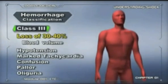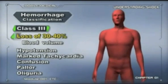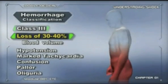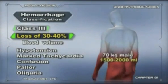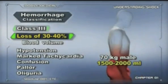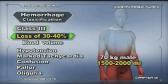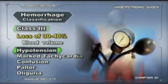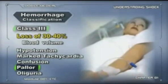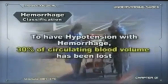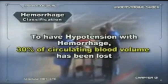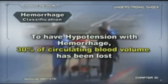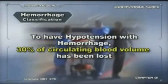Class III hemorrhage is a loss of 30 to 40 percent of blood volume. In a 70 kilogram man, this is 1500 to 2000 milliliters. These patients will have hypotension, marked tachycardia, confusion, pallor, and oliguria. Note that in order to have hypotension with hemorrhage, 30 percent of the circulating blood volume has been lost.